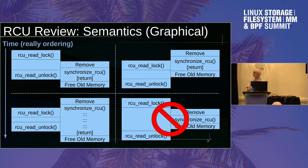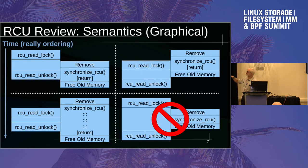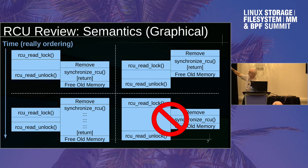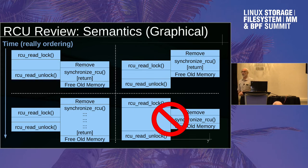Looking at the temporal piece: this shows four different scenarios. Time increases from top to bottom in each scenario. The upper left is a situation where a reader started on some CPU before an updater did — meaning the reader might have a reference to something the updater removed. The updater is going to remove it, invoke synchronize_rcu, and that synchronize_rcu had better not return until that reader is done.